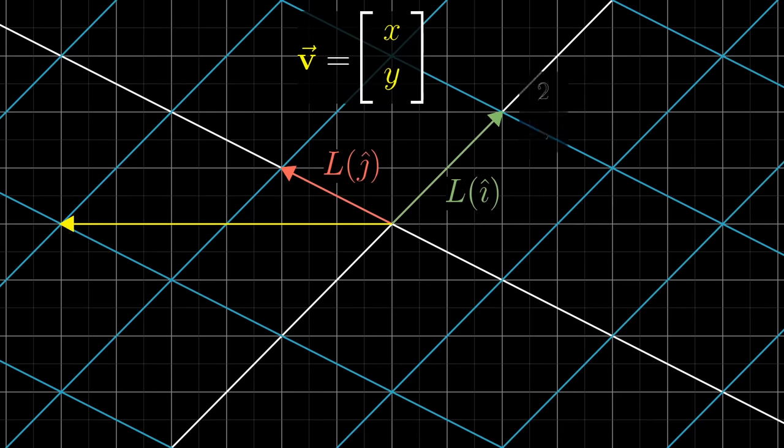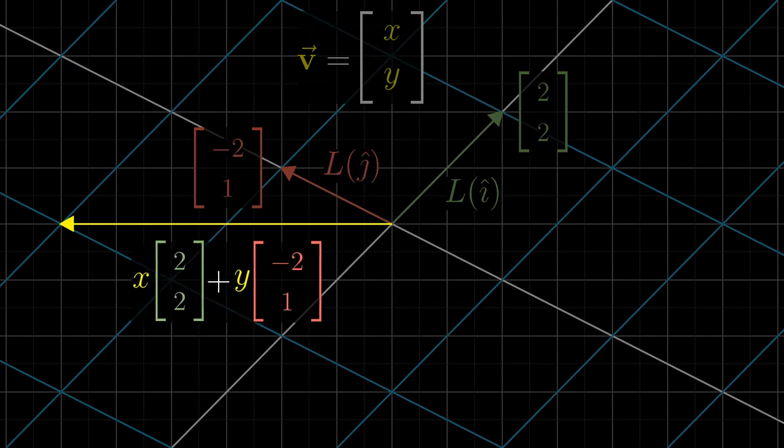This means if you keep a record of the coordinates where i hat lands and the coordinates where j hat lands, you can compute that a vector which starts at x, y must land on x times the new coordinates of i hat plus y times the new coordinates of j hat.